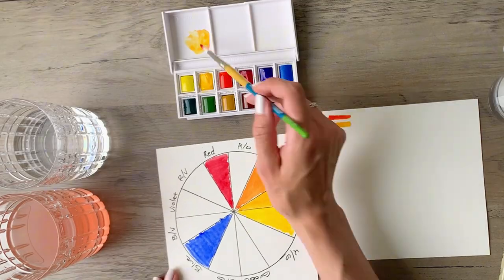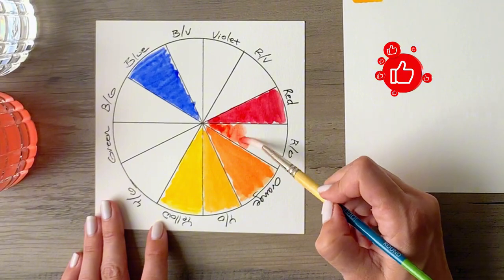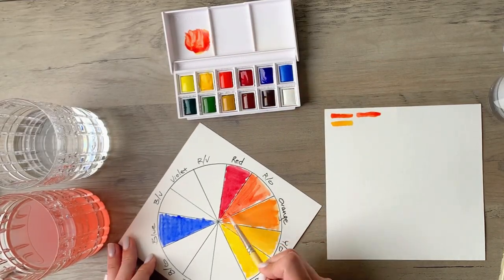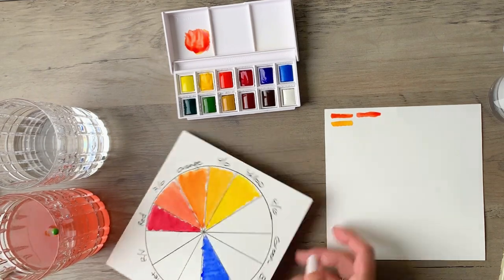Then rinse your brush and go back into the red and add that to the mix and that will create, you guessed it, the red orange. You are doing so well. We have a third of the color wheel done already. Isn't this gorgeous? Look how many colors you've made already.